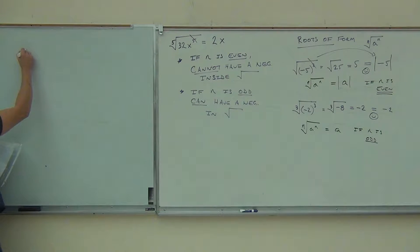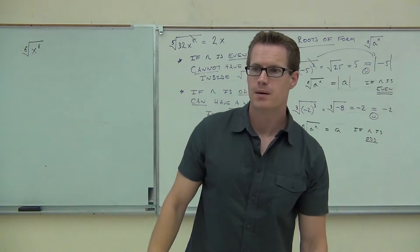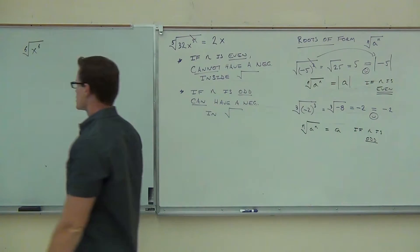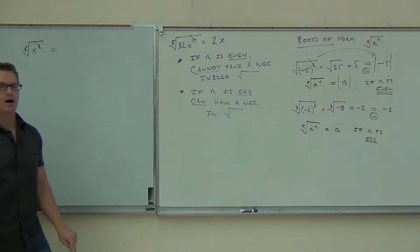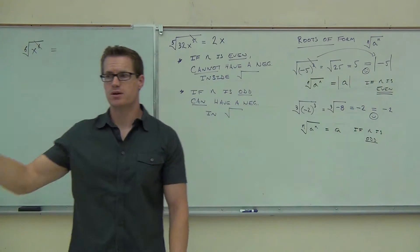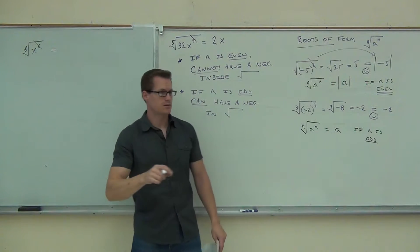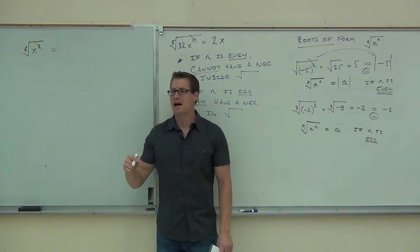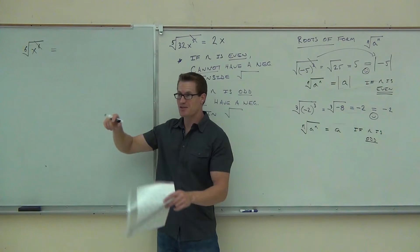So let's do 6th root of x to the 6th. First, does the power match the root? Yes. So I'm still going to be able to cross these things out. You just have to understand when I'm going to have to have an absolute value and when I'm not. Do I have an absolute value here? Yes. If it's even, if n is even, I'm going to have an absolute value. Is n even? Yes. So am I going to have an absolute value or not? Yes.